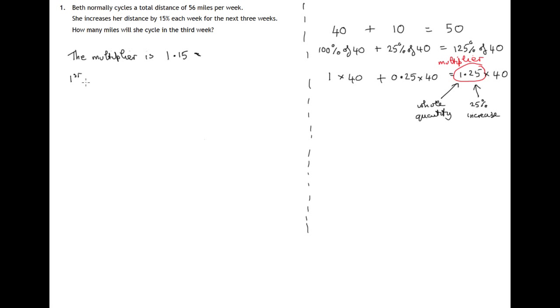The increase in the first week is 15%. So during the first week, she cycles 56 times 1.15.